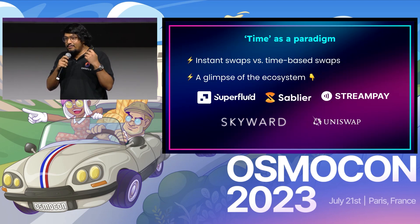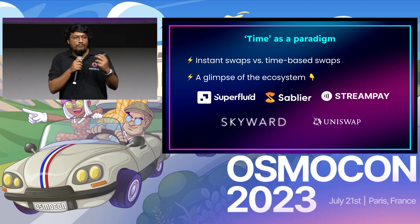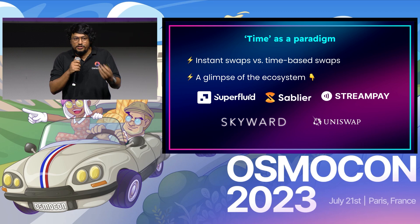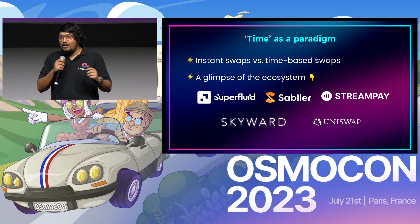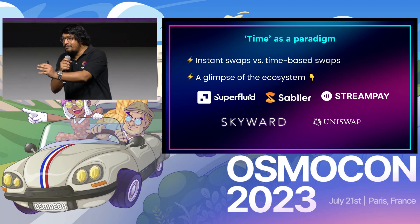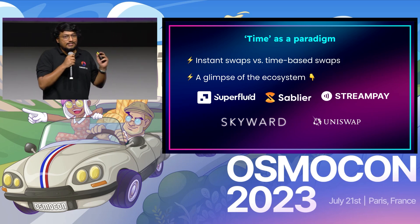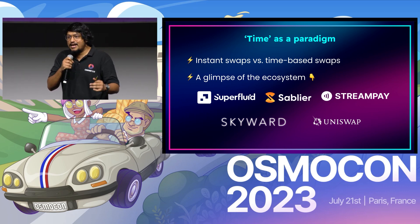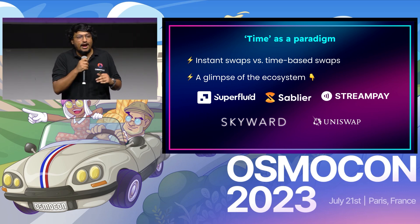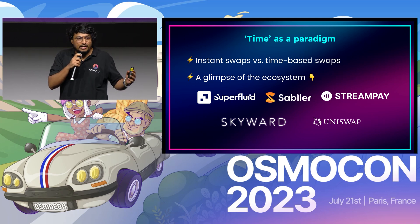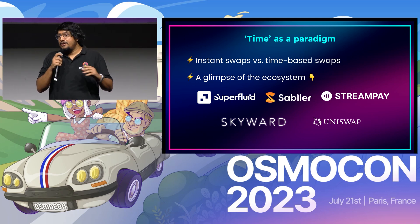Let's quickly talk about time as a paradigm. You have instant token swaps on Osmosis at this point in time, and you have Uniswap on Ethereum with instant token swaps. But imagine if you can swap tokens over a period of time — this is what StreamSwap is enabling, and at this point in time it's being utilized as an interchain launchpad where multiple assets have launched.